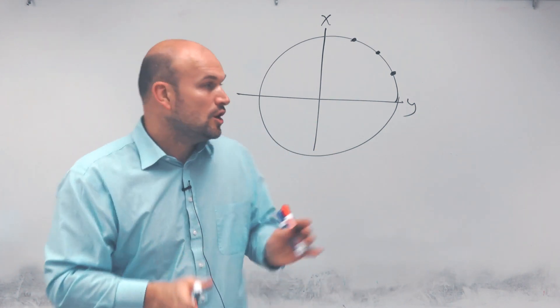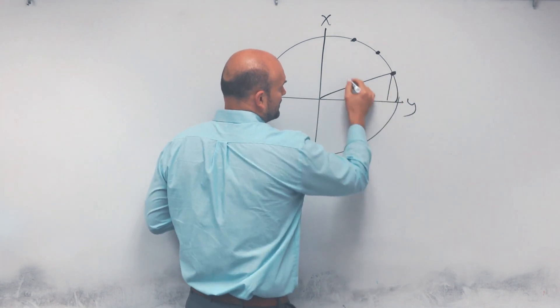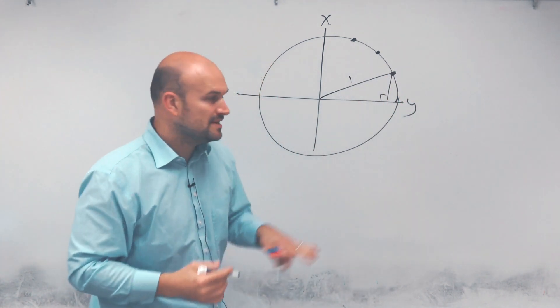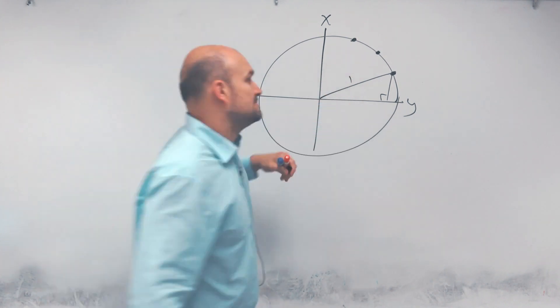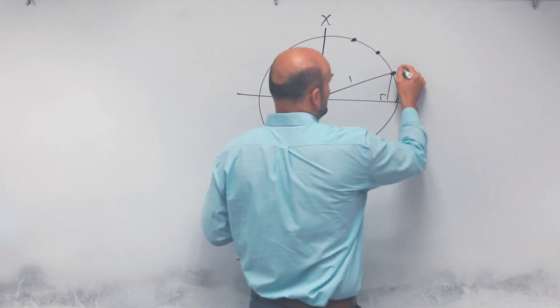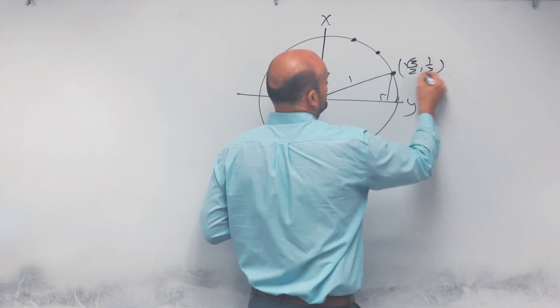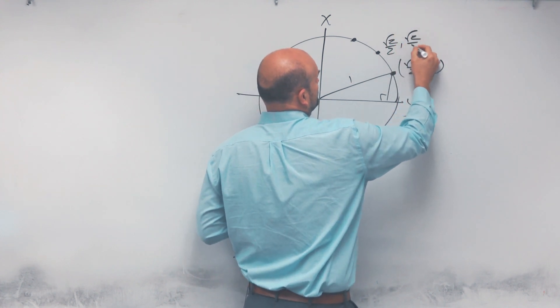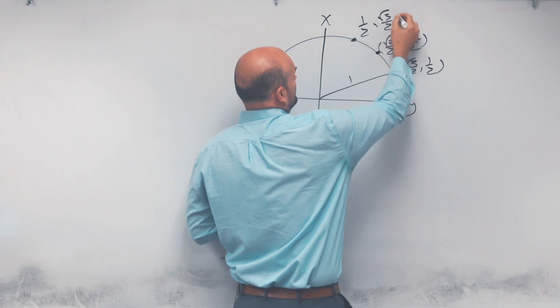They come from our special right triangles when the hypotenuse is going to be equal to one. You can see the hypotenuse is one, and we have our angles. This is going to be the 30, 45, and 60 degree angle. Now these coordinate points I did show the students. This one's going to be square root of 3 over 2, square root of 2 over 2, and 1 half, square root of 3 over 2.